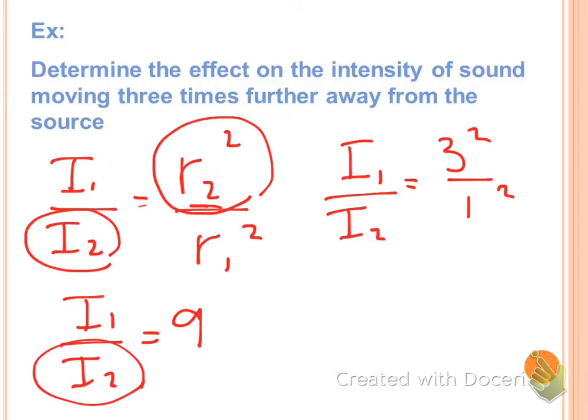And if we want to solve for I2, we're going to switch those two places, which means that intensity of the first over nine is equal to intensity of the second. Can anyone explain to me in terms of sound what that means at the second point?